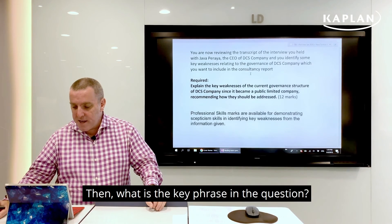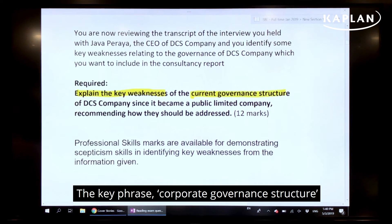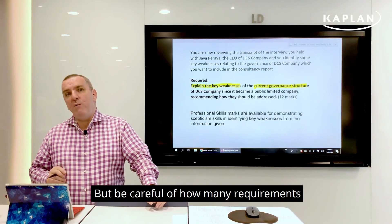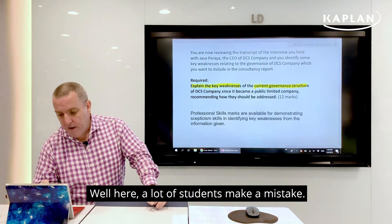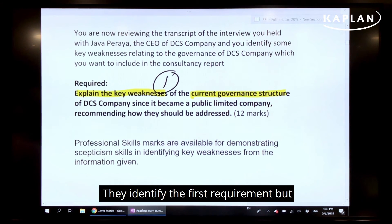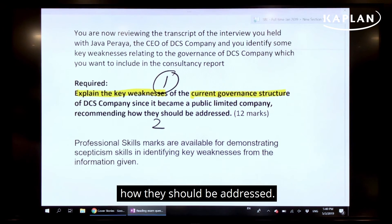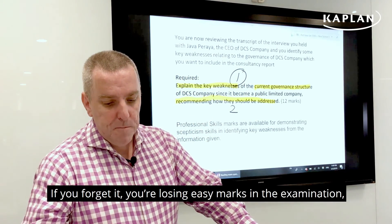Then, what is the key phrase in the question? Here it is 'explain the weaknesses' — specifically the corporate governance structure of the company. But be careful: how many requirements are we looking for? This is where a lot of students make a mistake. They identify the first requirement but forget the second, because the second requirement is there but easily missed. The second requirement is to recommend how they should be addressed. Everybody forgets it, and if you forget it, you're losing easy marks in the examination.